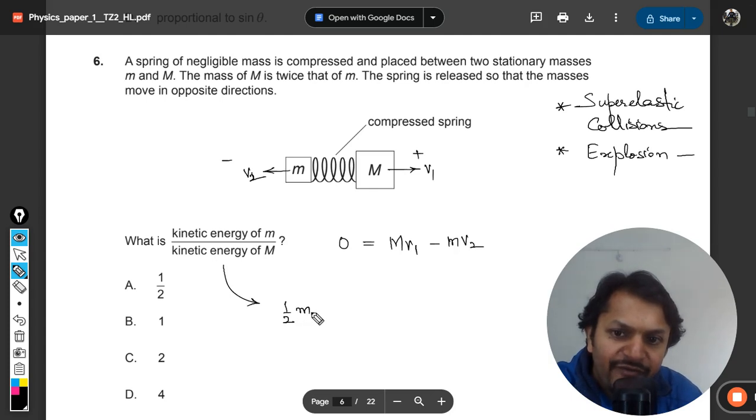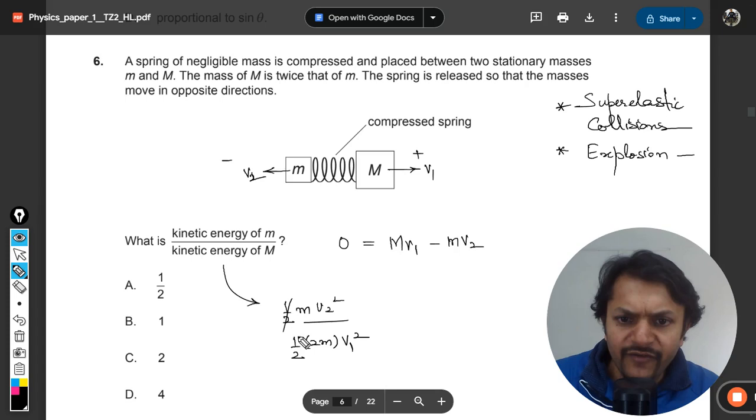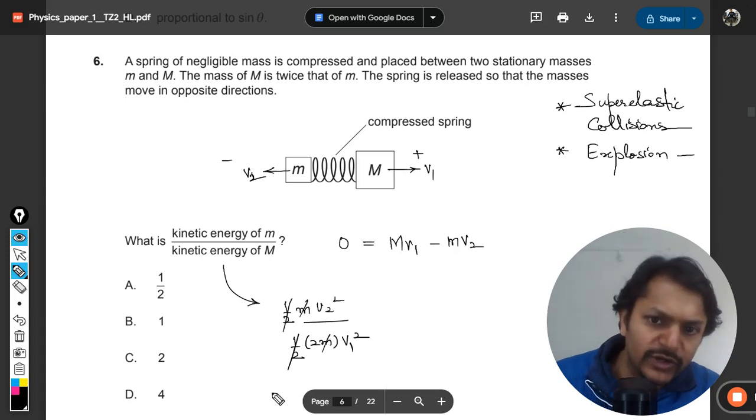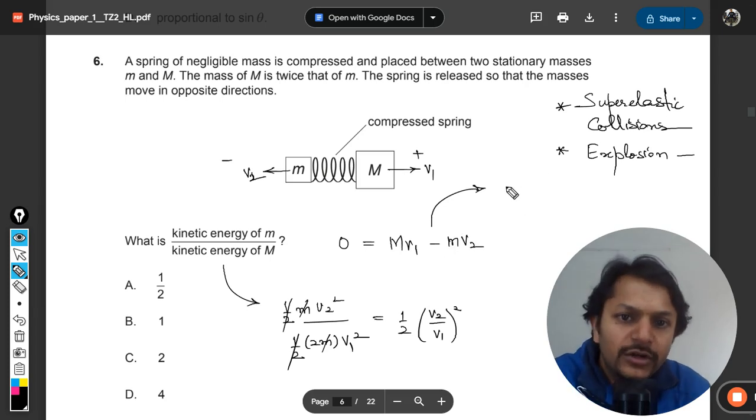This can be written as half m v2 squared divided by half capital M which is 2m into v1 squared. This is the ratio that we want to find. Half and half is getting cancelled out, m and m is also cancelling out, so the ratio that we want to find is v2 divided by v1 whole squared. We are going to find it from here.